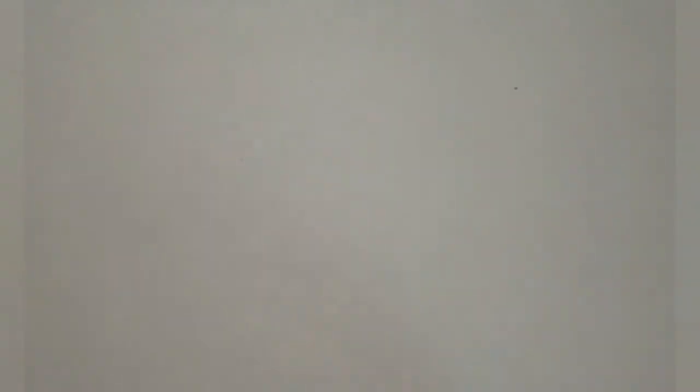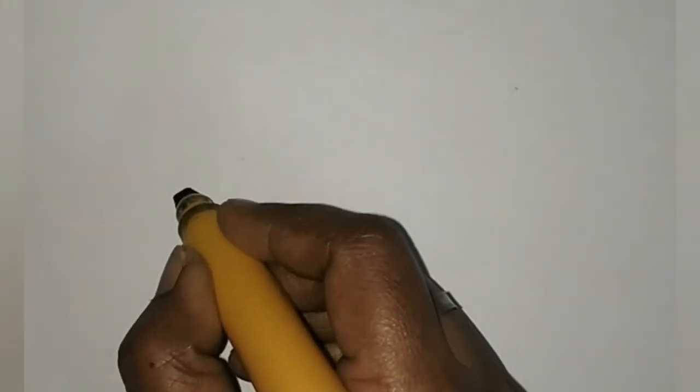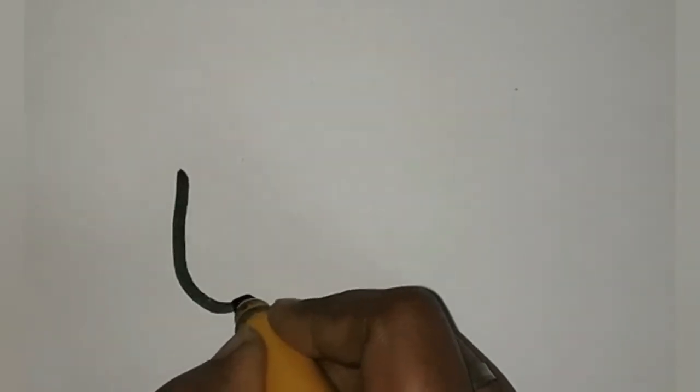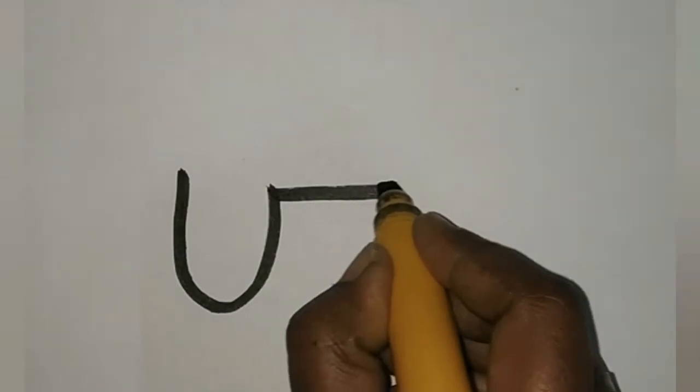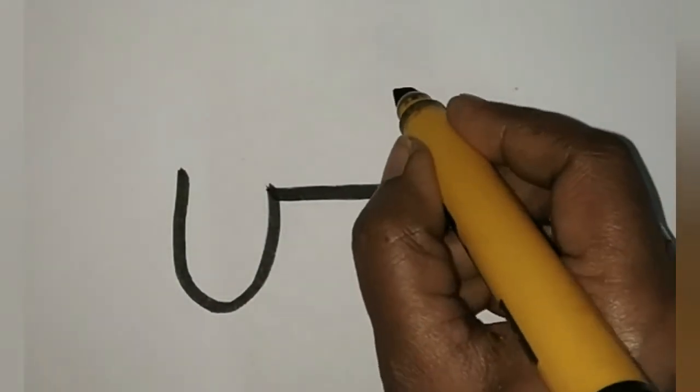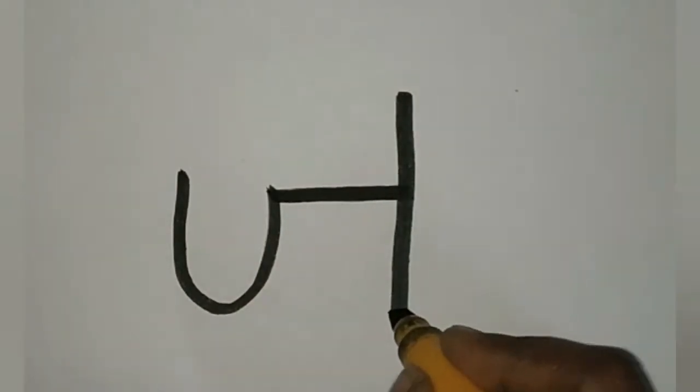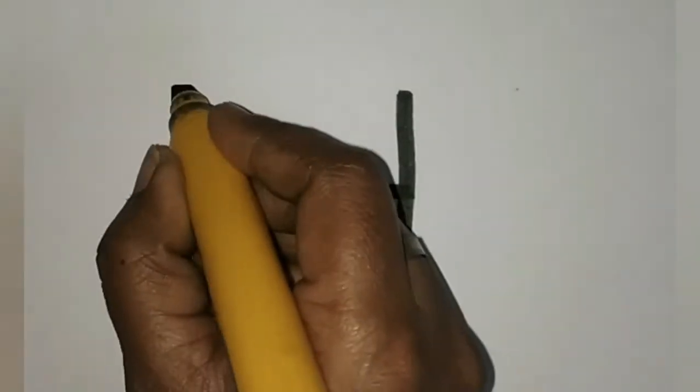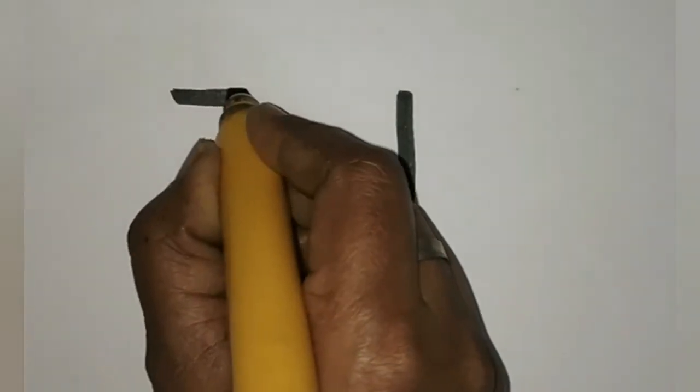Next letter is J. In a letter J, see here. First, curve line. Next, slipping line. Next, standing line. Next, slipping line, then curve line. Okay? Understood?